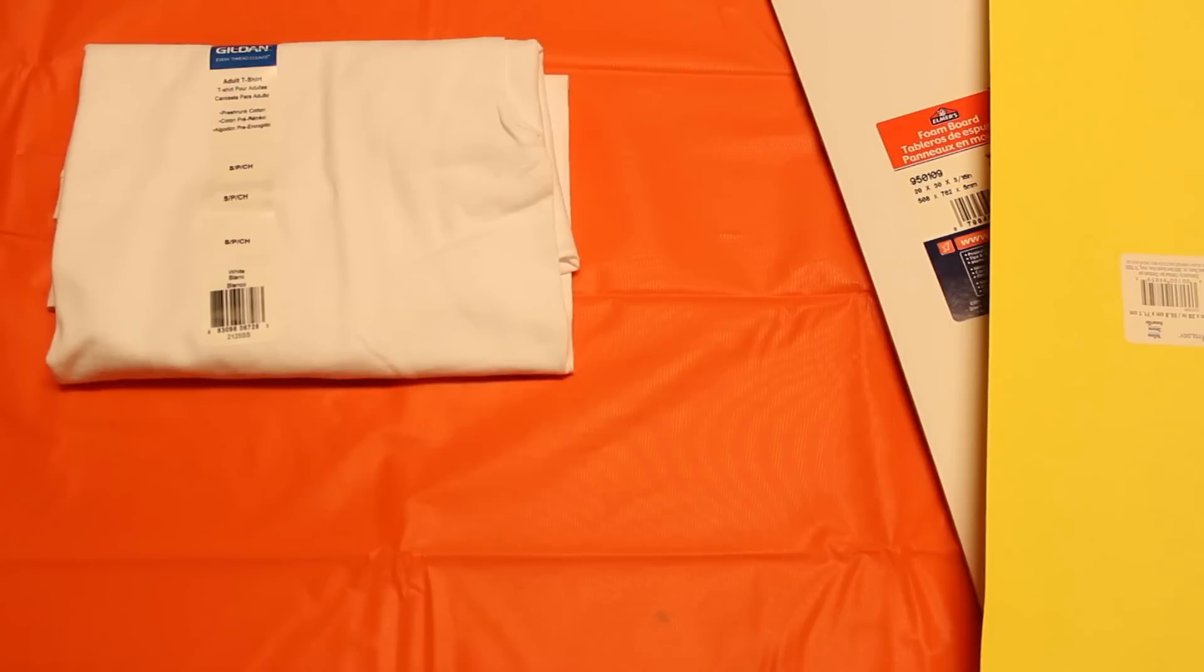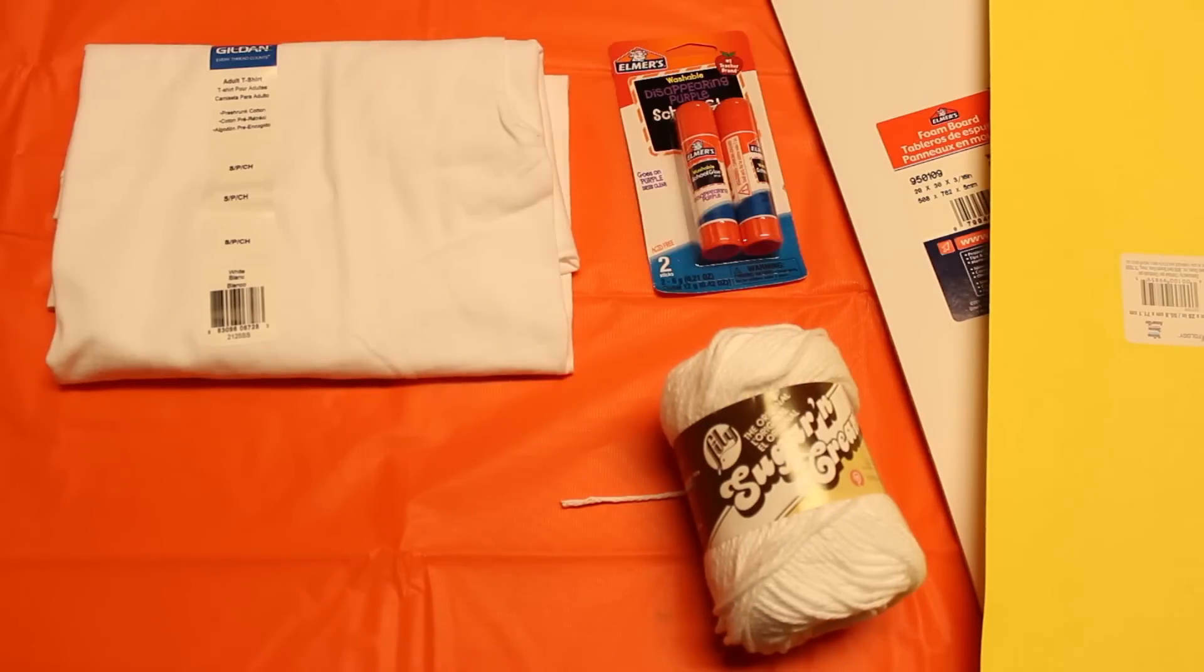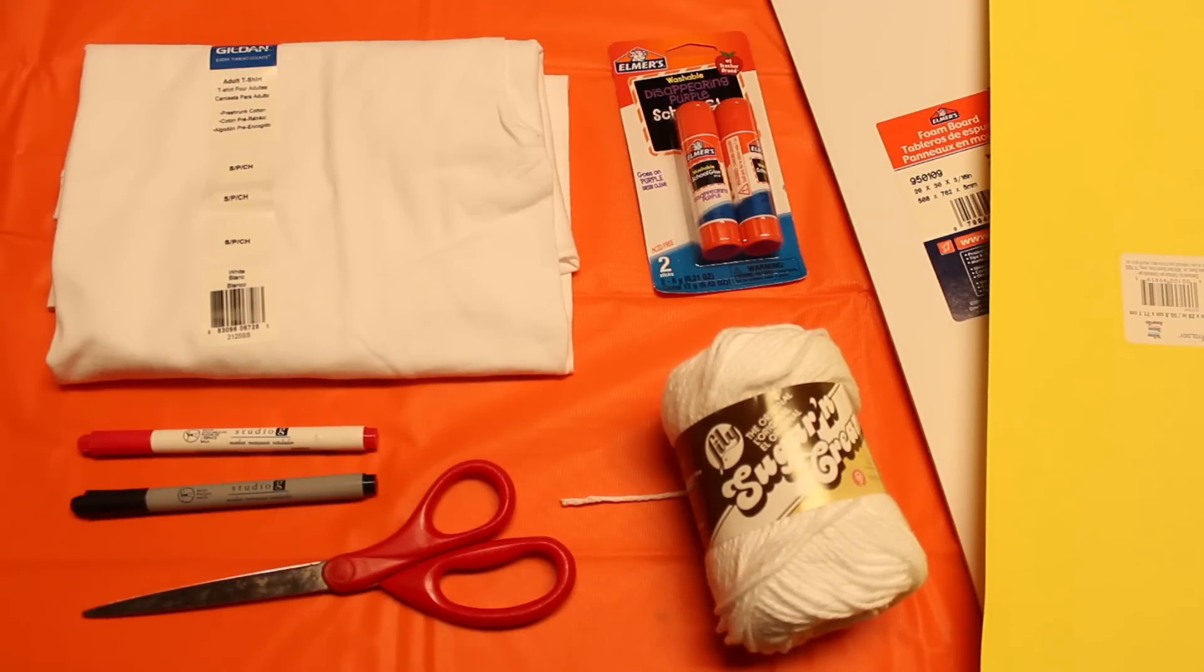Now here are some cute original ways to make yourself turn into Snapchat and Instagram. You'll need a white board, a yellow poster board, white t-shirt, yarn, glue stick, scissors, a red marker, and a black marker.